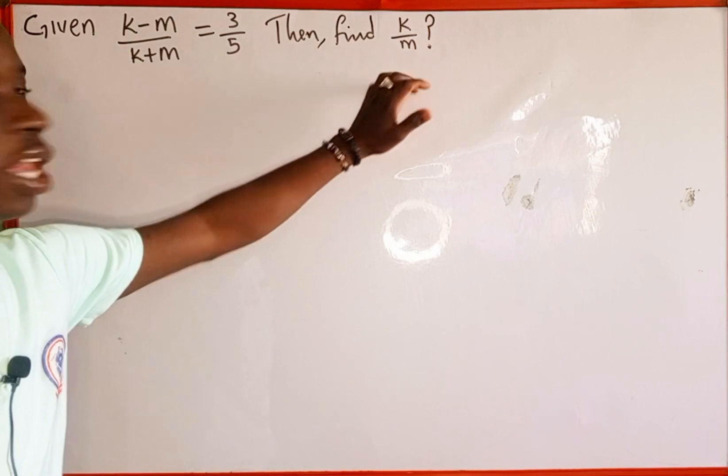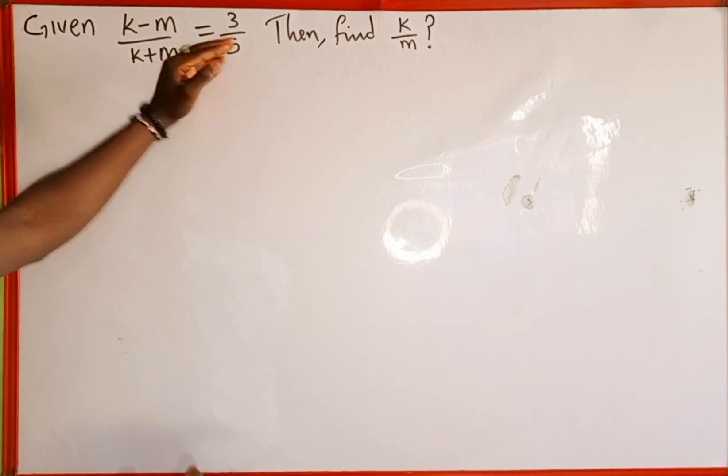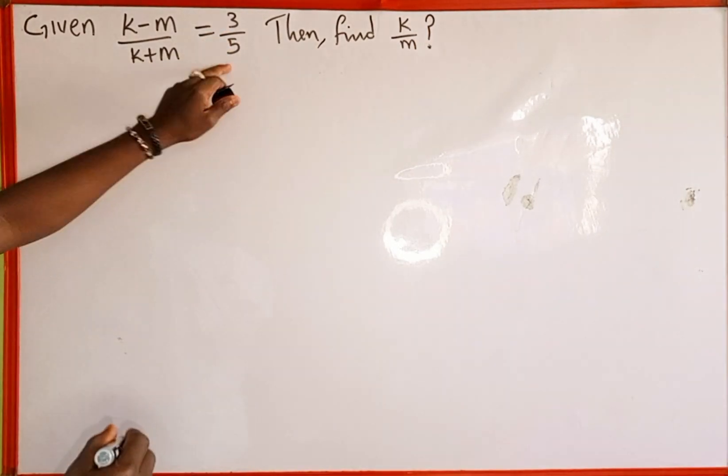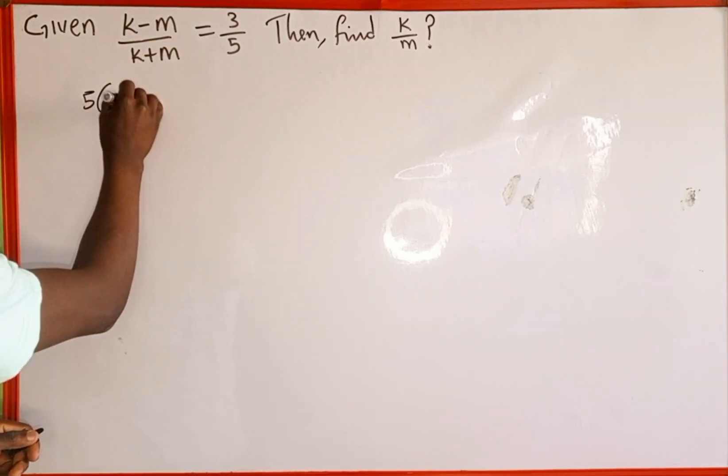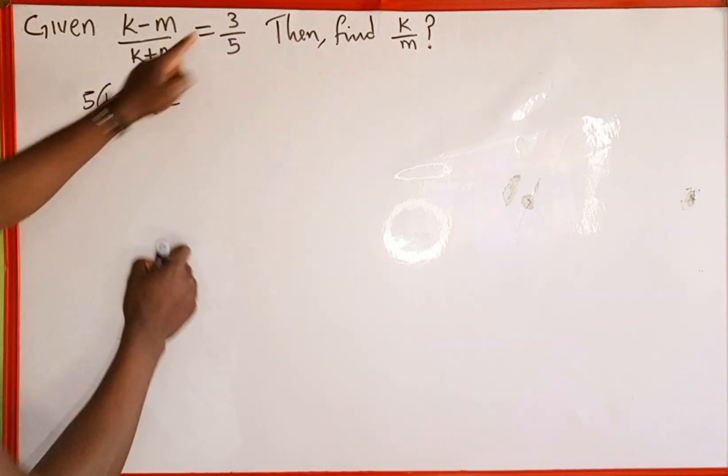The first thing we are going to do is cross multiply. 5 multiplied by k minus m, we are going to have 5 into the bracket of k minus m, which is equal to 3 multiplied by k plus m, the same as 3 into the bracket of k plus m.